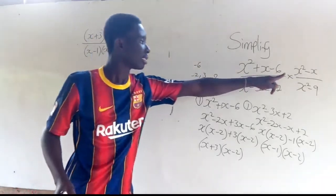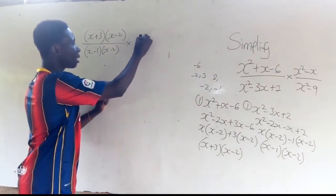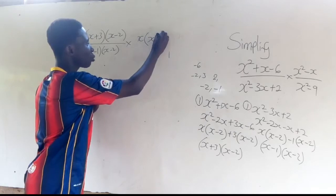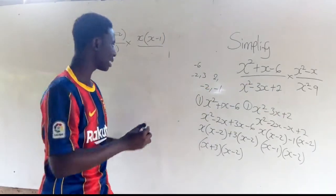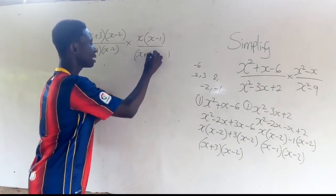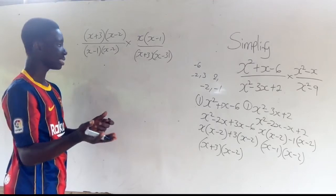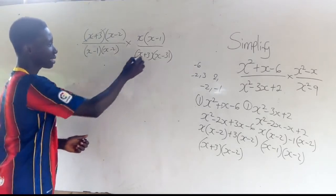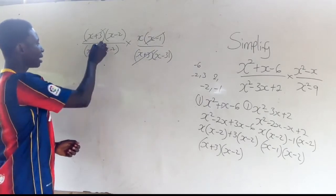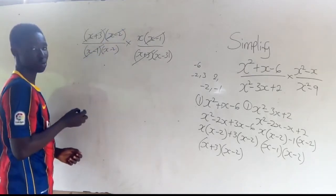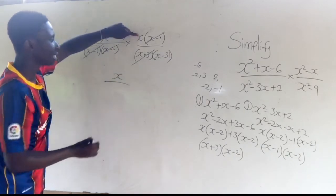For the remaining numerator terms, we factorize x out to get x(x minus 1), and the other expression is a difference of two squares giving (x plus 3)(x minus 3). Now we cancel common factors: (x plus 3) cancels, (x minus 1) cancels, and (x minus 2) cancels, leaving us with x over (x minus 3). This is our final answer.